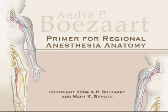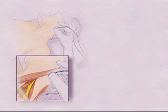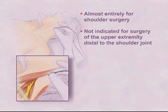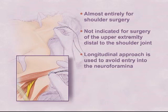The single injection interscalene block is almost entirely performed for shoulder surgery. This block is not indicated for surgery of the upper extremity distal to the shoulder joint. The approach used in this production is the longitudinal approach, also called the lateral approach, which is used to avoid possible entry into the vertebral neural foramina.